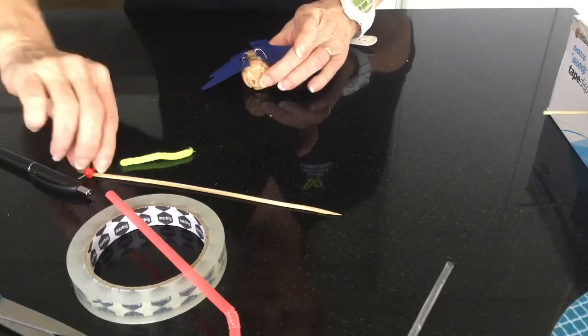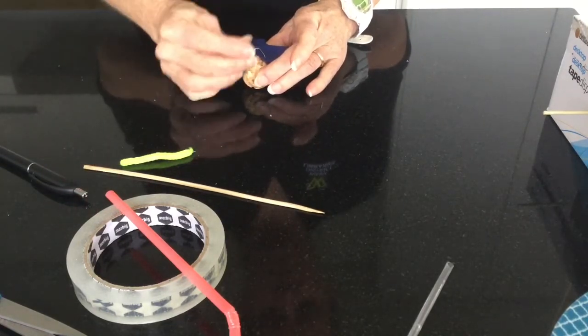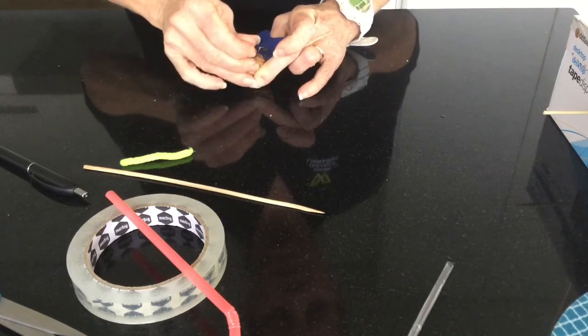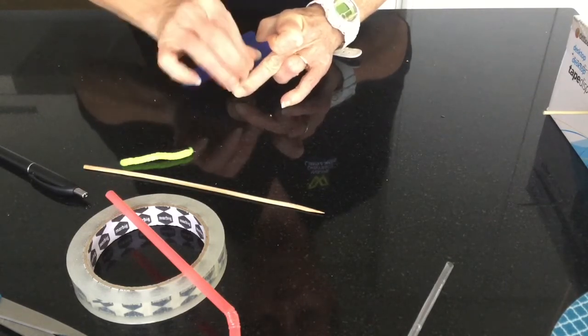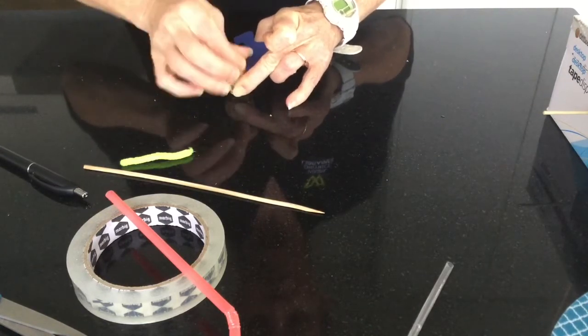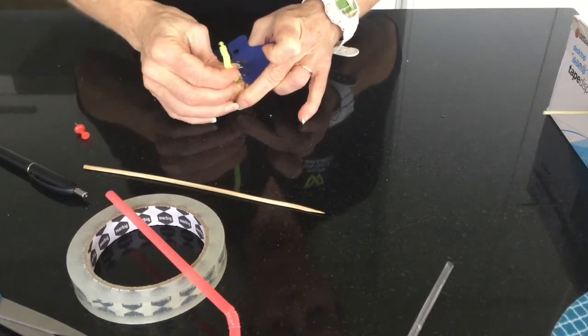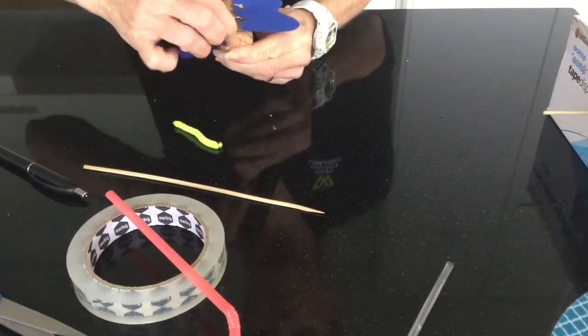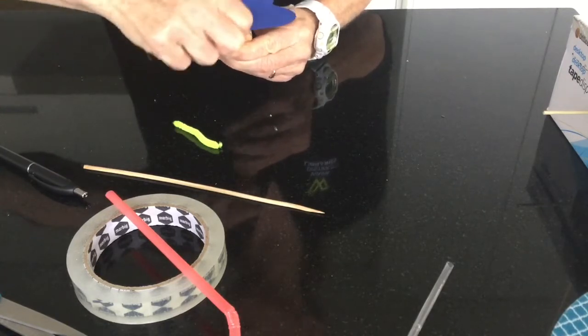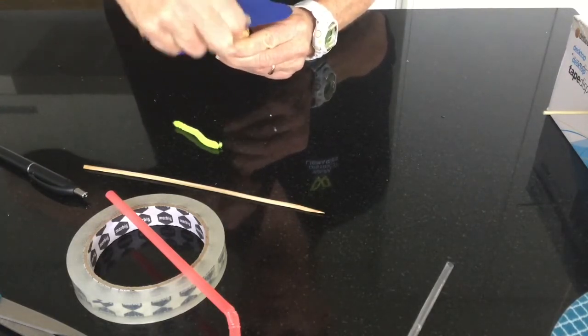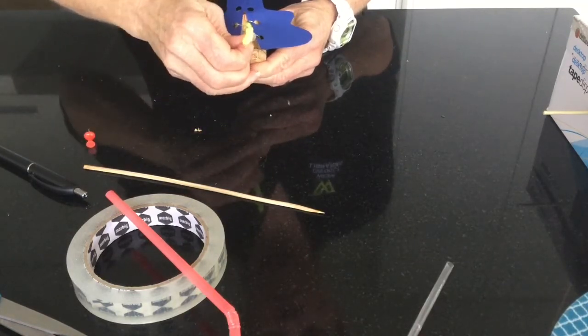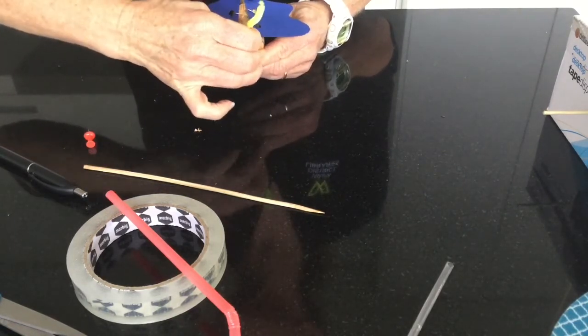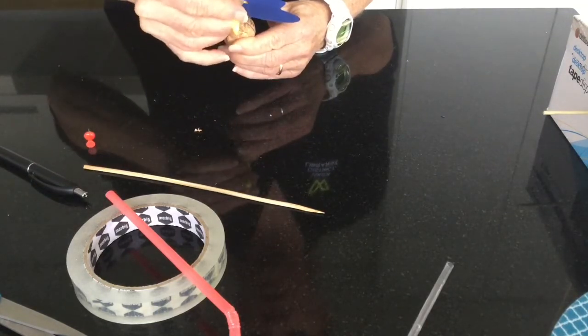Now what we want to do is we're going to make another hole just in the top here. Let's see if we can make this as big as we can. Because now we're going to take a four centimeter length of pipe cleaner and we're going to pop it into the hole there. This is going to be for the neck of our bird. And then I'm going to bend it over slightly there.